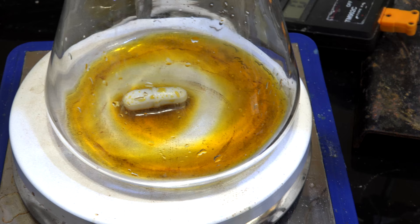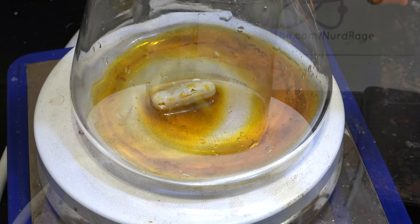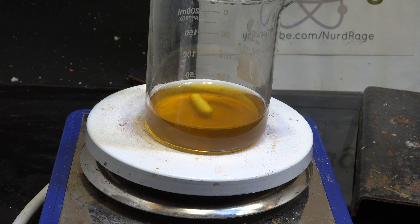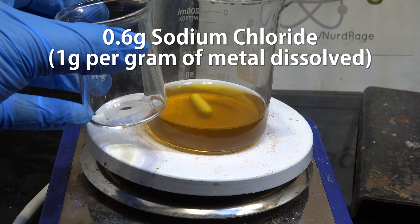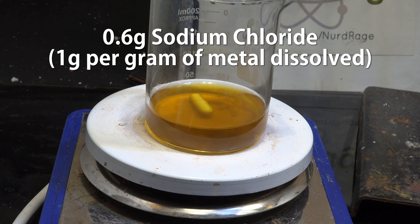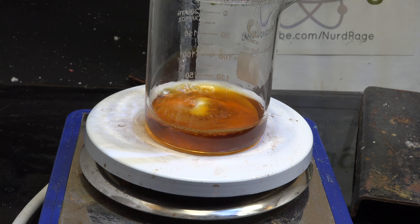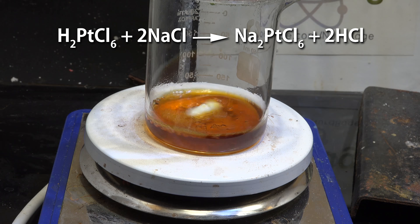Now to remove the base metals by alkaline precipitation. Transfer the solution to a beaker. Mine is a lot more than 10mL now since I've washed out the flask with water. Nonetheless, we can still proceed forward. For every gram of material that was readily dissolved, add an equal amount of sodium chloride salt. Since we dissolved 0.6g of metal, we add in 0.6g of sodium chloride. Now gently boil down until dry. Don't use too high a heat or you'll decompose the platinum salts. I set my hot plate to a temperature of 120 celsius.